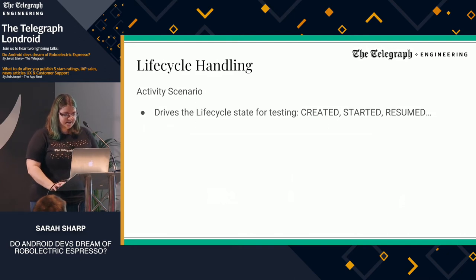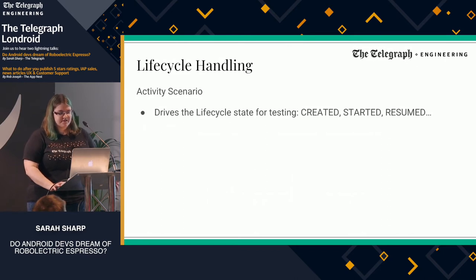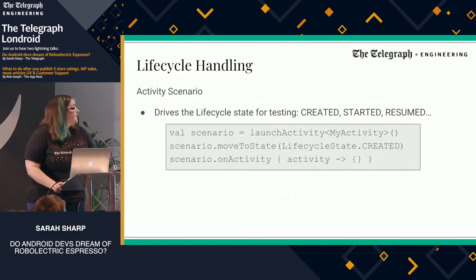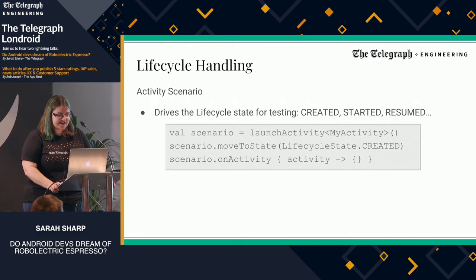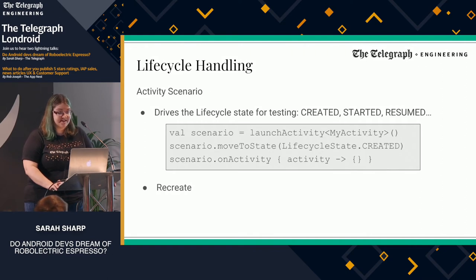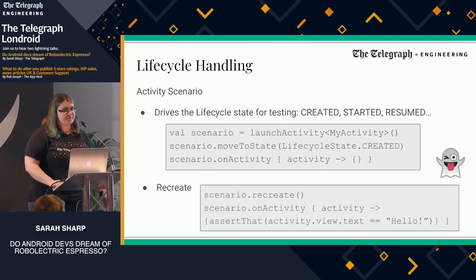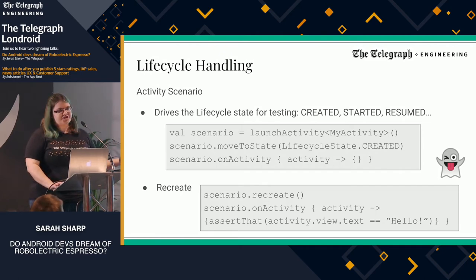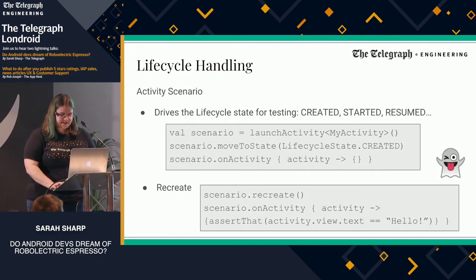The activity scenarios I mentioned earlier drive the lifecycle state for testing. These are quite useful if you want to test lifecycle changes — the created, start, and resumed states. You can launch an activity, move to a state, move between these states, and then test whether the same thing still applies. There are methods to recreate and destroy the activity. The recreate method will destroy an activity and then create it again, so if you have a state change you want to test — like that text input is preserved after that state change — you can do it using the recreate methods.